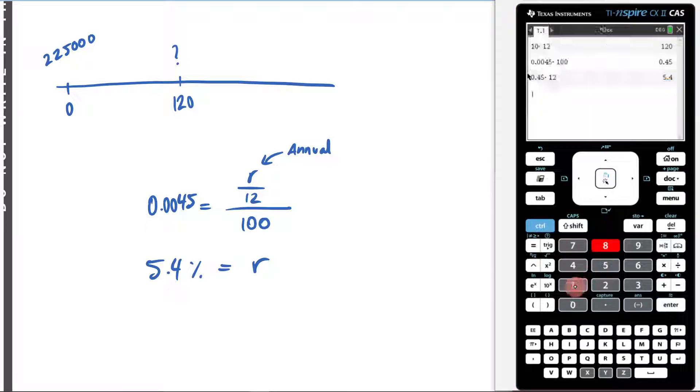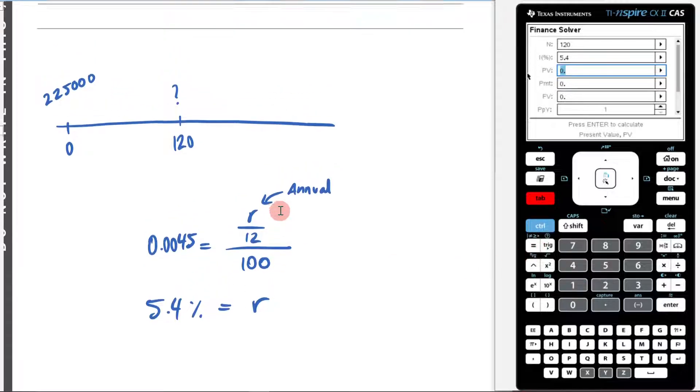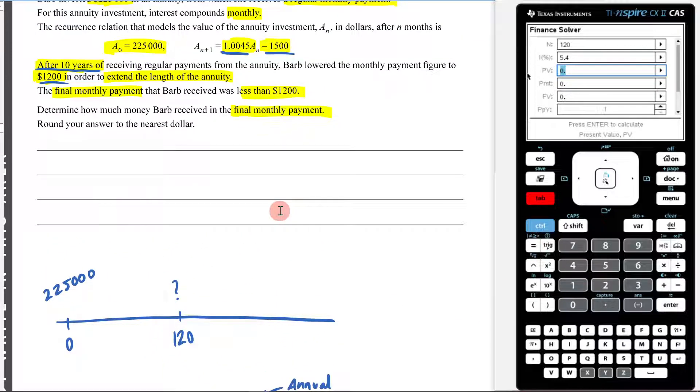So now I can go menu 8-1, go back to my finance solver, put 120 in here. My annual interest rate is going to be 5.4. My present value of the loan, again, something else you need to be careful of, is that this is going to be negative 225,000 because it's money that is in the annuity. I don't have access to all of it.